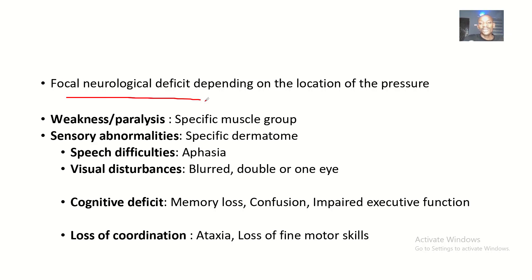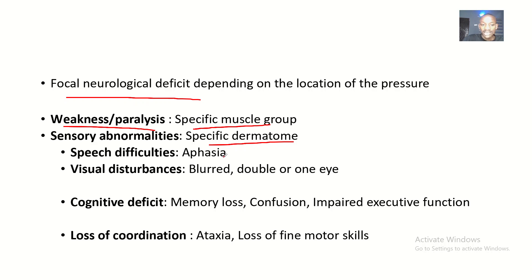Depending on the location of the problem, there could be weakness and paralysis — a neurological deficit affecting a specific muscle group. There could be sensory abnormality, which is a neurological deficit affecting a specific dermatome. There could also be speech difficulties, which is aphasia — specifically expressive aphasia — affecting the Wernicke's area or the nerves supplying the muscles of the tongue.